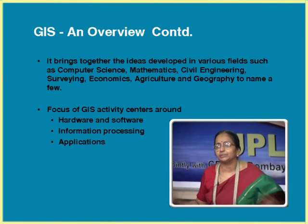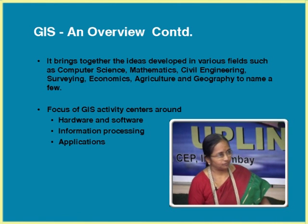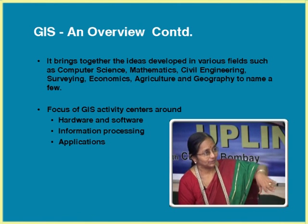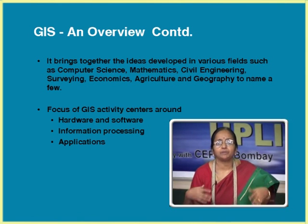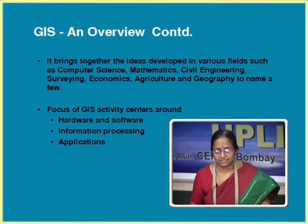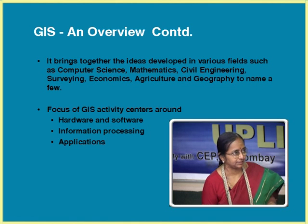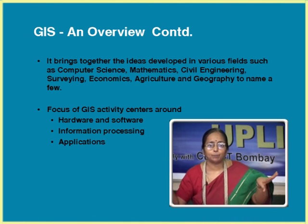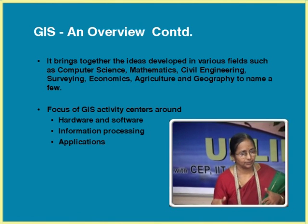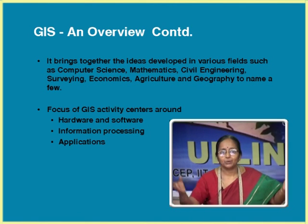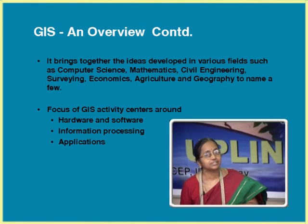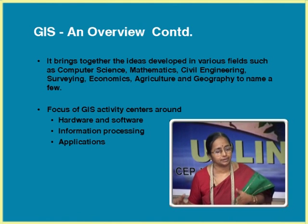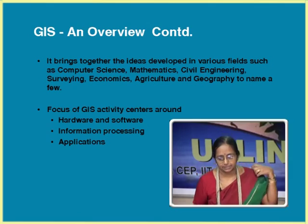Broadly, we can categorize GIS technology into three parts. One is hardware and software — because GIS is not new; conventionally people made decisions using manual approaches, but today we are in digital technology, so hardware and software are needed. Next is information processing — you pull the data, put it in, and process it. And finally, applications — you apply the processed information for something. So broadly: hardware and software, information processing, and applications.